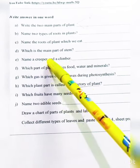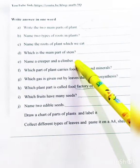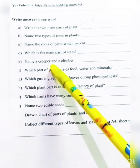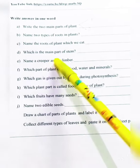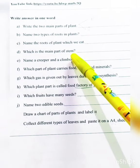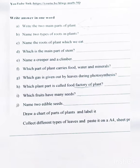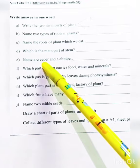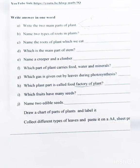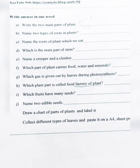Name a creeper and a climber. Creepers grow along the ground from one place. Climbers take support from another tree and grow upward. An example of a creeper is watermelon.